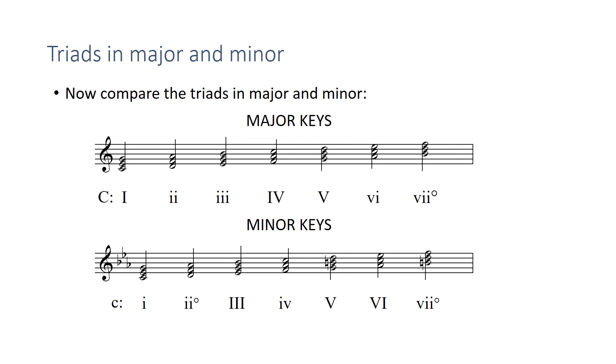For the minor keys, let's just go through these in order. We have our minor one chord, the diminished two chord, major three chord, minor four, the major five chord, major six, and the diminished seven chord, leading back to the minor one chord.